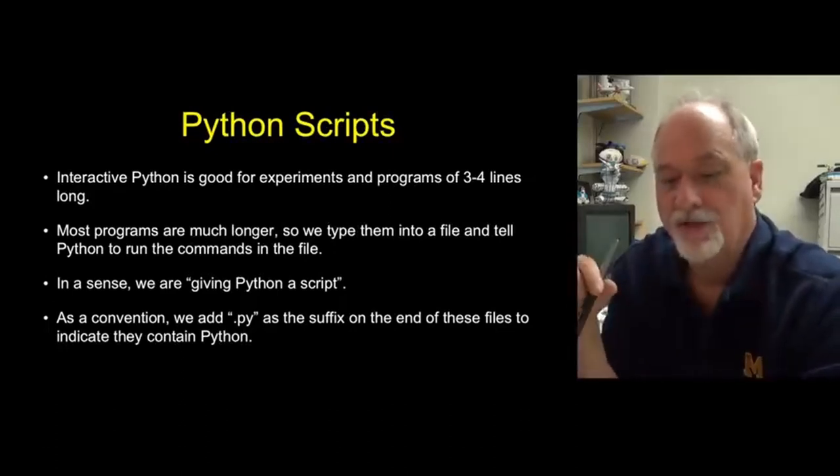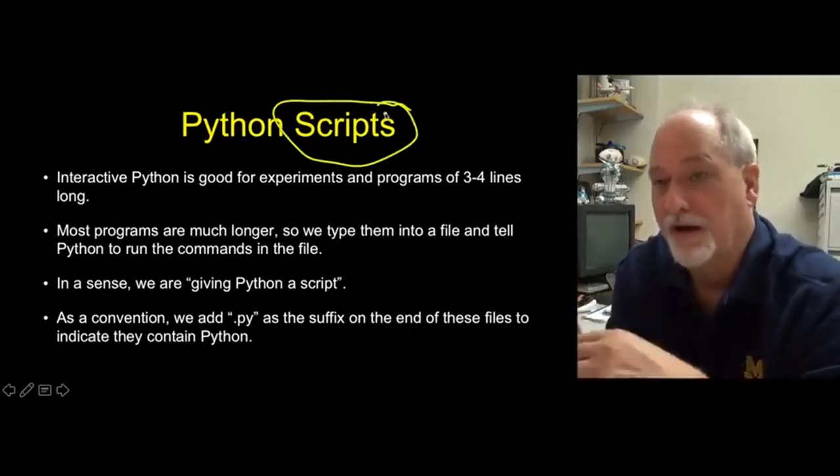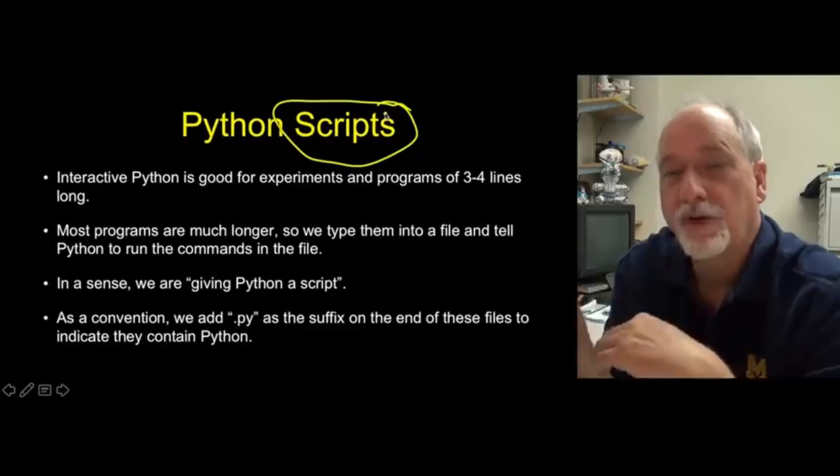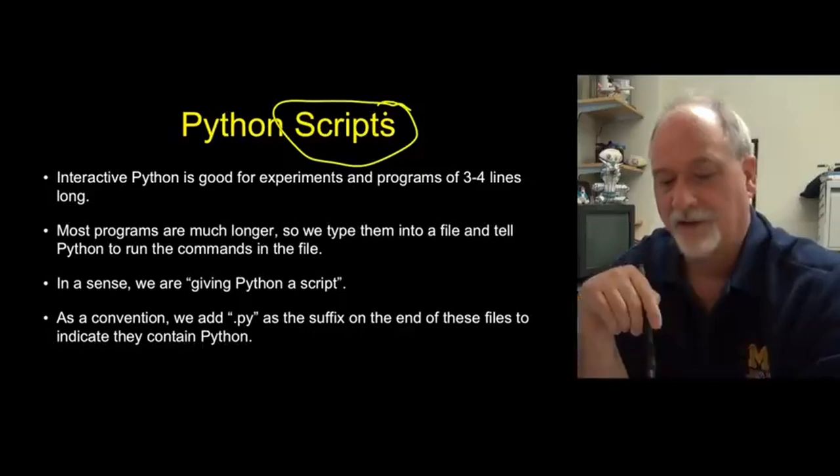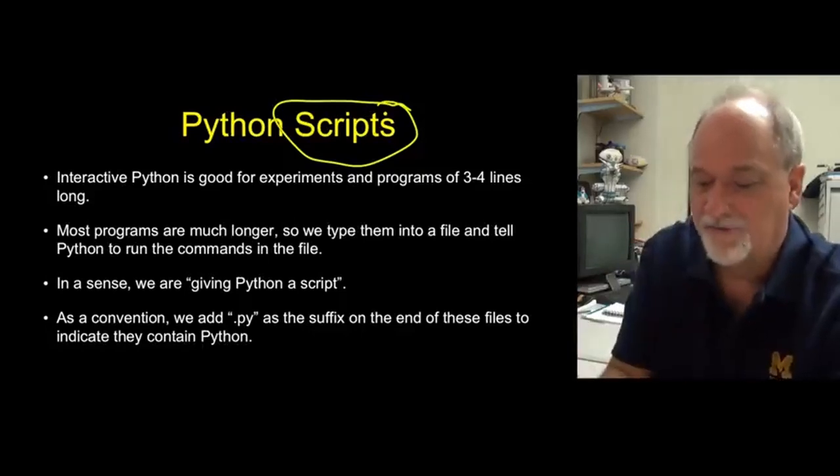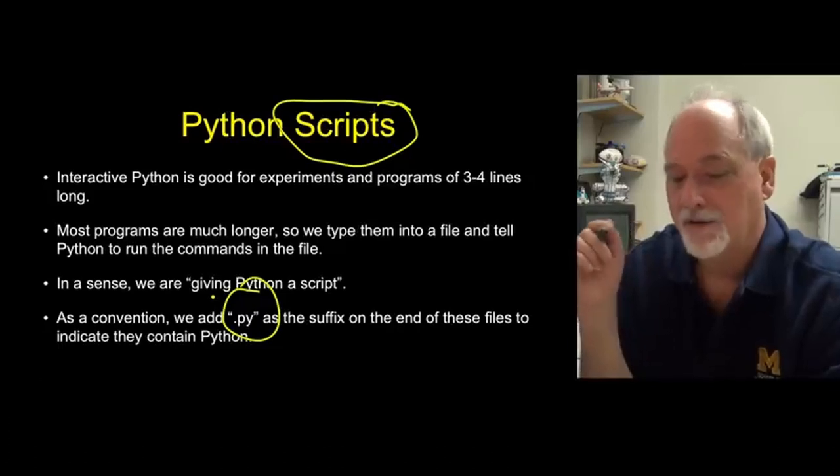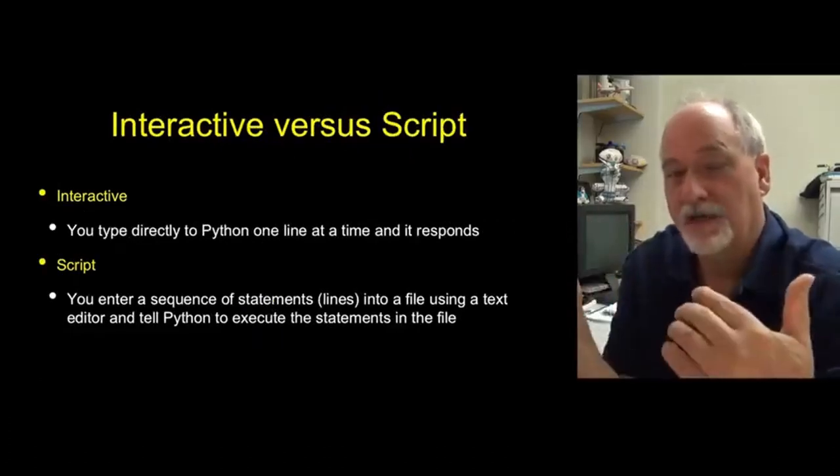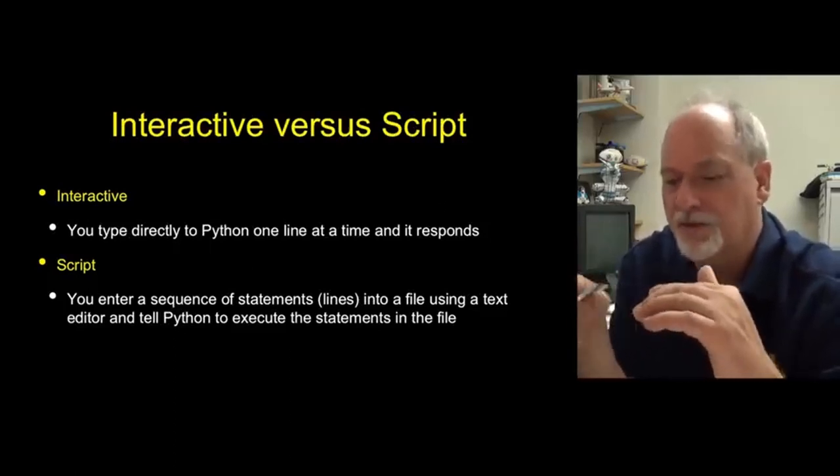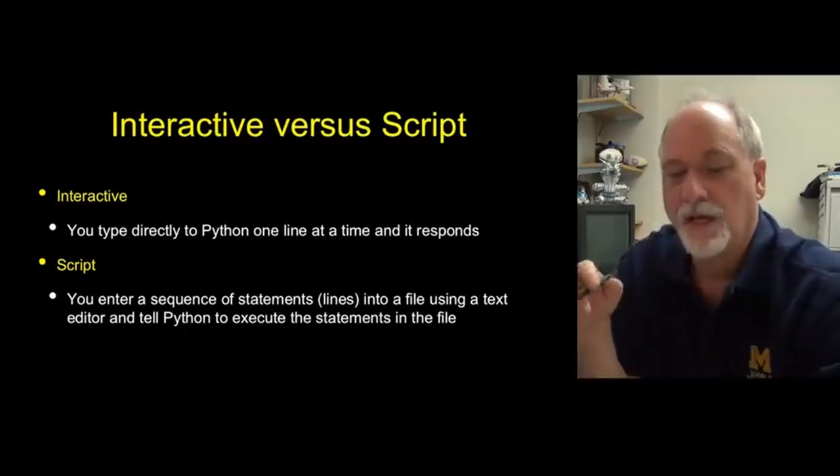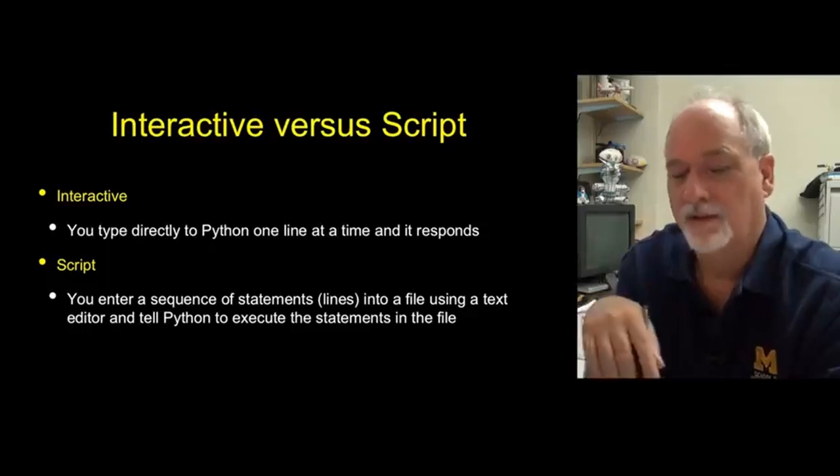So the better thing to do is, as your program gets a little larger, to write a script. Put your Python instructions in a file and then tell Python to read from the file and then run the script as it's entered in that file. We tend to name these files with .py, and I've got a series of videos that you can watch to figure out how this all works. Like I said, you can type interactively to Python, it's a great way to experiment with Python, check to see if a statement does what you think it does. But script is the way, after we are past one or two lines of code, we write it in files and then run it separately.